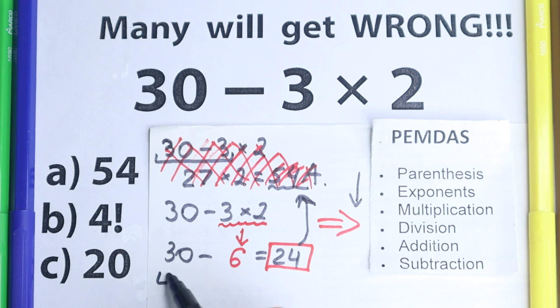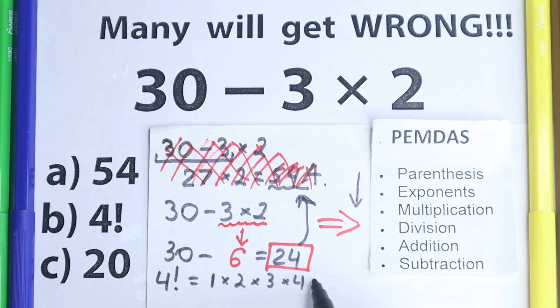So we have 4 factorial right here, which is equal to, we know from school that factorial is a product from 1, 2, 3, 4 in our case. 1 times 2 times 3 times 4. Equals 1 times 2 is 2, 2 times 3 is 6, and 6 times 4 is 24.